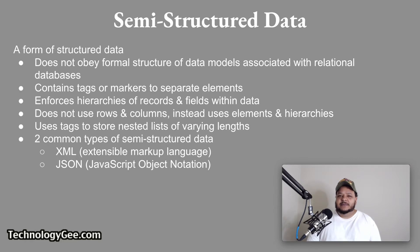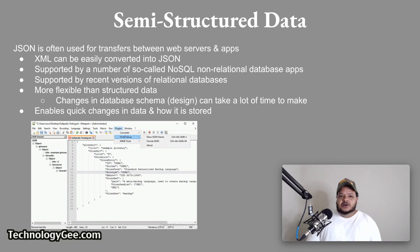Two common types of semi-structured data include XML, or extensible markup language, and JSON, or JavaScript Object Notation. JSON is often used for transfers between web servers and apps. XML can be easily converted to JSON, and JSON is supported by a number of NoSQL non-relational database apps, as well as recent versions of relational databases. One of the reasons JSON is becoming popular is that it is more flexible than structured data.